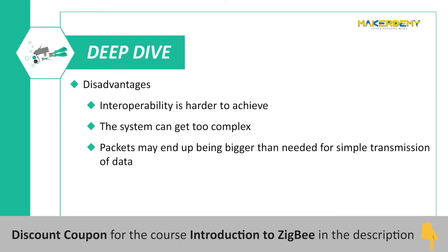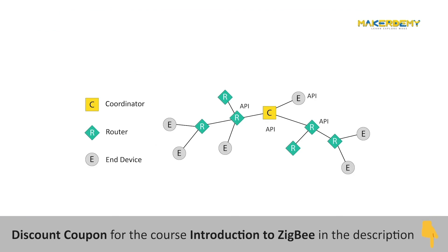The API mode is not perfect either — there are drawbacks too. One, interoperability with other protocols is harder, as we need to unpack, get the core data, parse it out, and then repack it into a different protocol packet. Two, the system can get too complex with all these different types of packets saturating the network just for some simple data transmission. In a real-world scenario, the XBee device nearer to the coordinator and the first layer of routers will be configured in API mode, while the periphery nodes or connectivity-enabling sub-networks will use transparent mode.